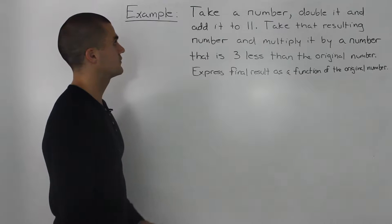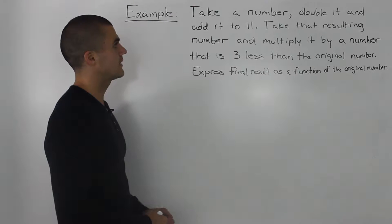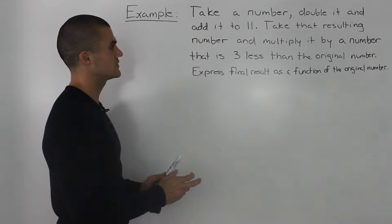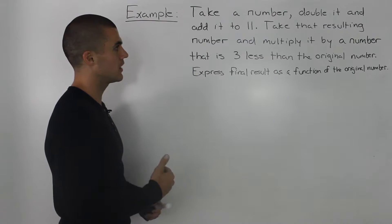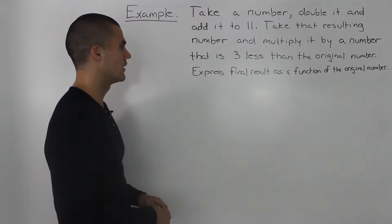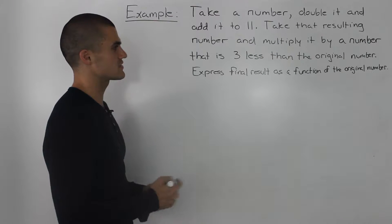Moving on to the next example, we have to take a number, double it, and add it to 11. And then we have to take that resulting number and multiply it by a number that is 3 less than the original number. Express the final result as a function of the original number.